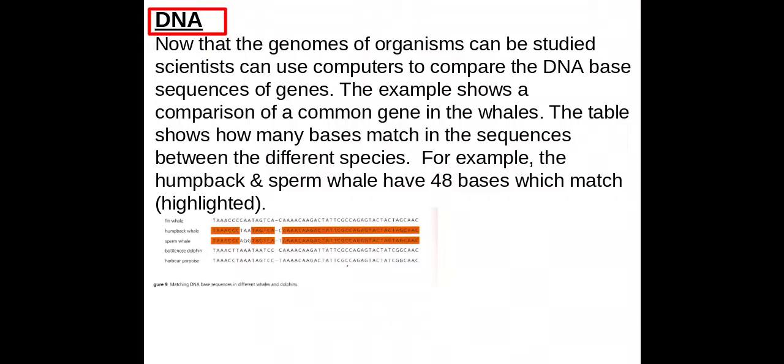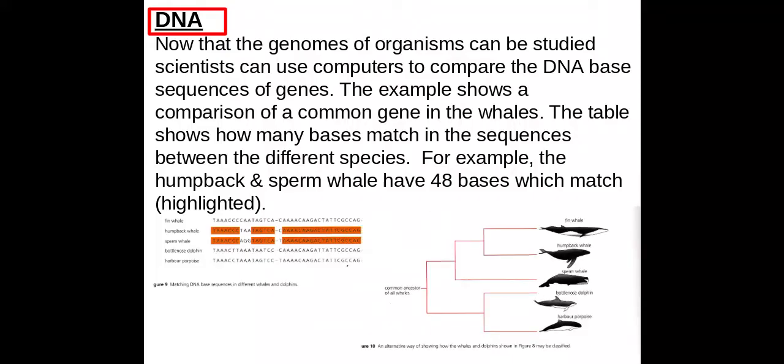If you look at the whales and dolphins here, you can see that the humpback whale and the sperm whale have a similar base sequence. Therefore, we can say that they're more closely related than we originally thought based upon just their observable features. This means we can rejig that phylogenetic tree.